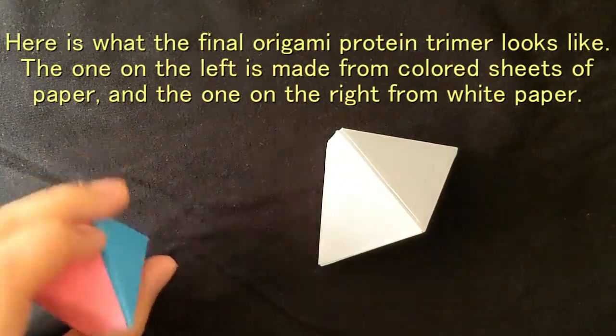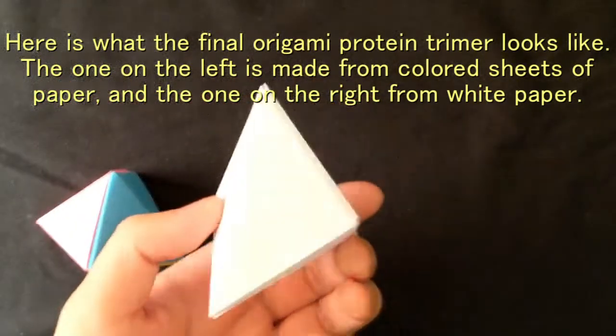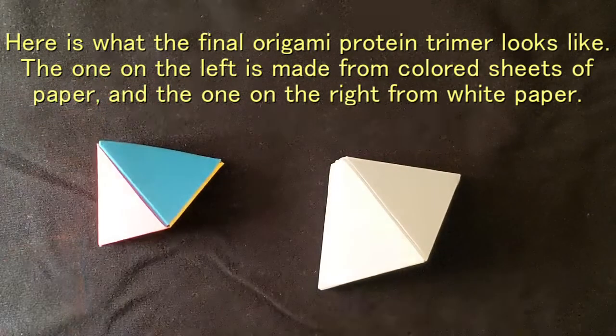Here is what the final origami protein trimer looks like. The one on the left is made from colored sheets of paper, and the one on the right from white paper.